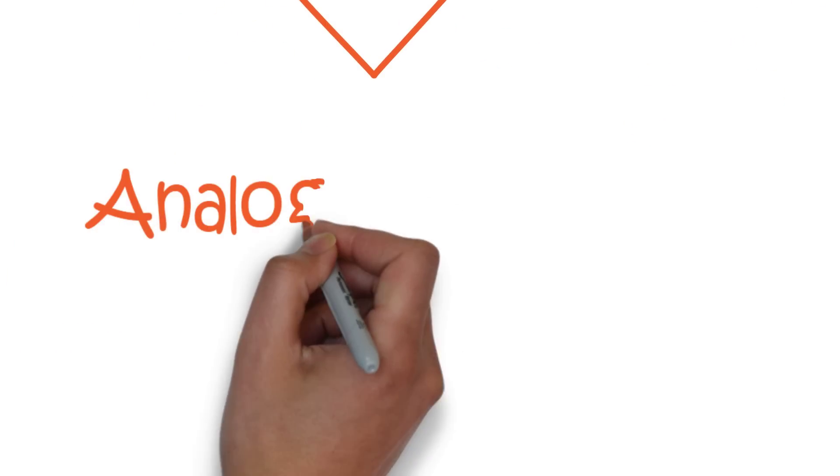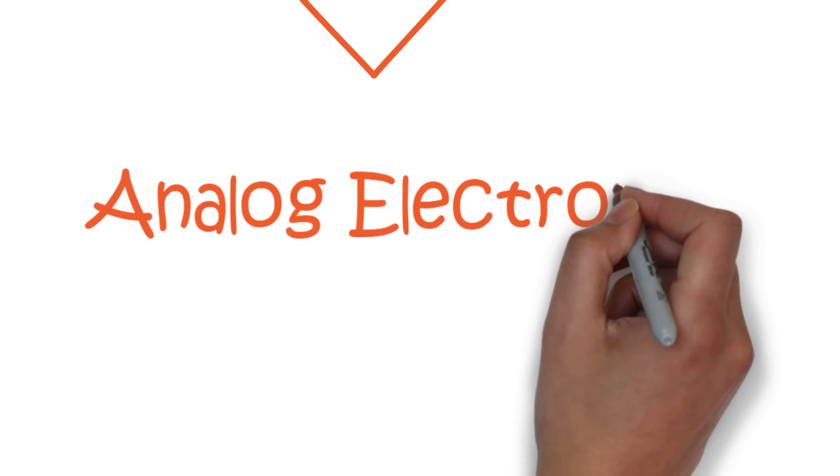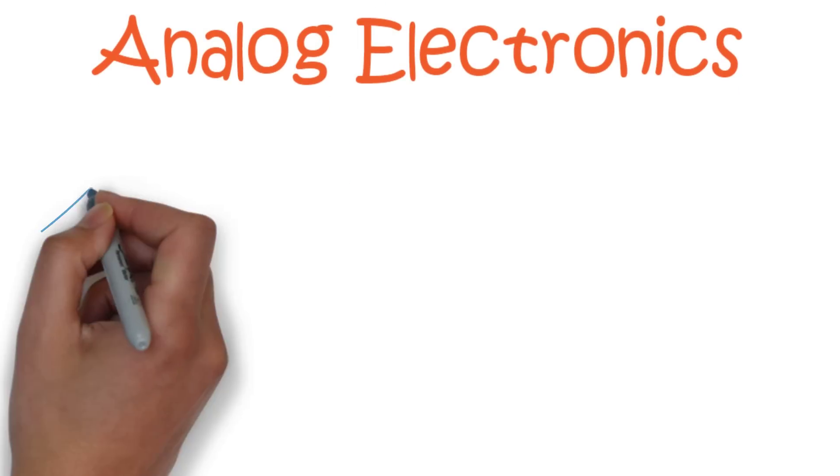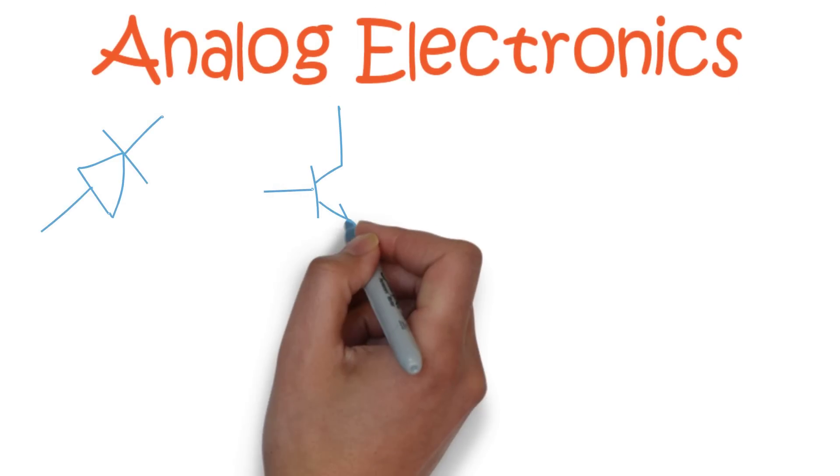We take this path we start getting into analog electronics and the foundation of electrical and computer engineering. So both degrees take this class. In this class you will begin to learn about diodes, transistors, and basic amplifiers.